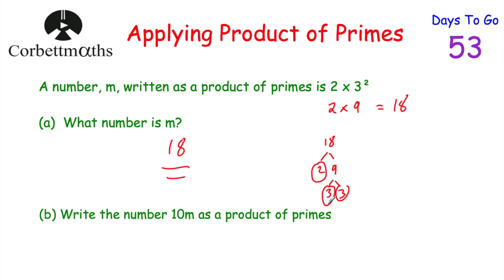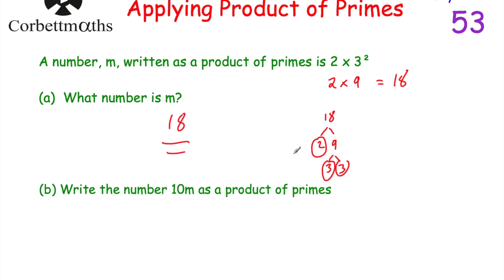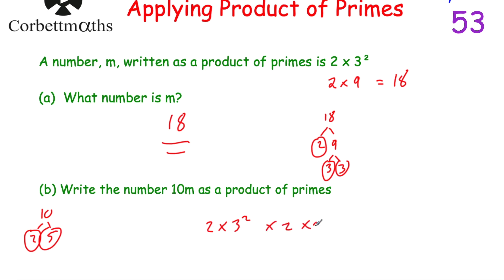The next part says to write 10m as a product of primes. 10m means 10 × m, so that's 10 × 18 = 180. There's a shortcut: m = 2 × 3², and 10 = 2 × 5 as a product of primes. So 10m = 2 × 3² × 2 × 5. Collecting the 2s: 2 × 2 = 2². So 10m = 2² × 3² × 5.